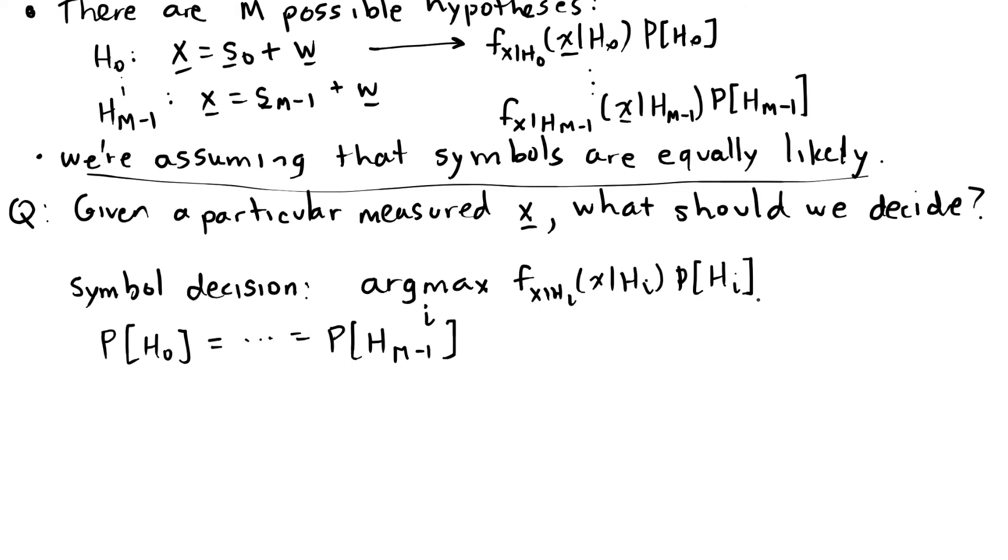So in that case, these probabilities at the end of this expression are all identical. They're not a function of little i. Whenever something's not a function of little i, and our symbol decision has an argmax of i, then we can rewrite that without the probability of H i.